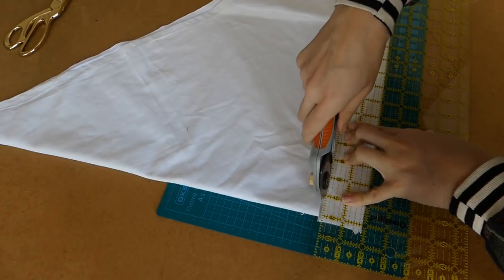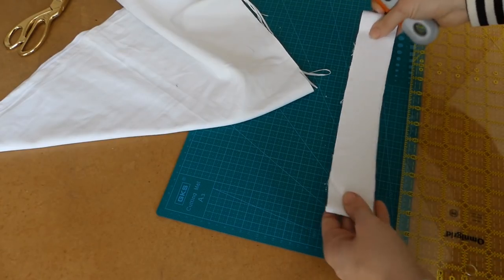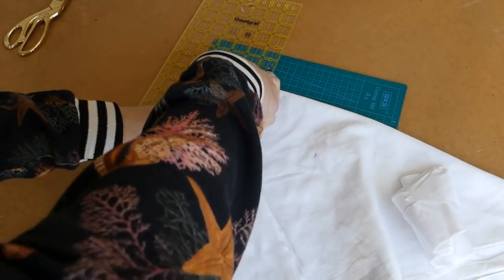So cut your strips two inch wide for one inch wide bias tape. The first strips will be the longest. Stop cutting when the strips become too small.